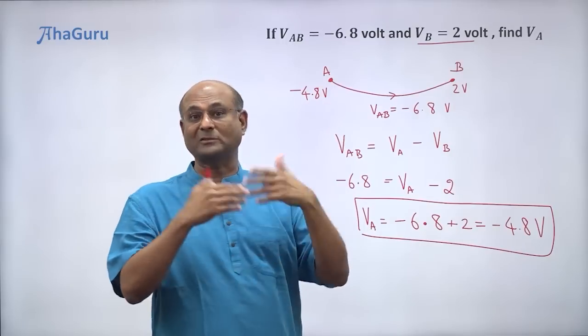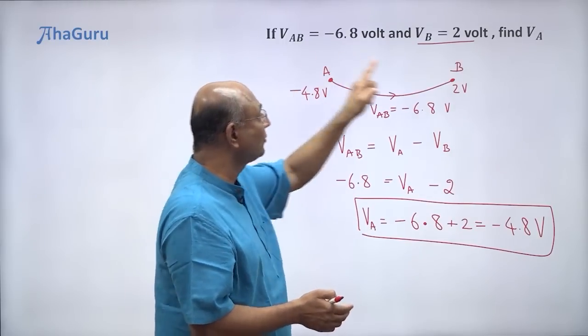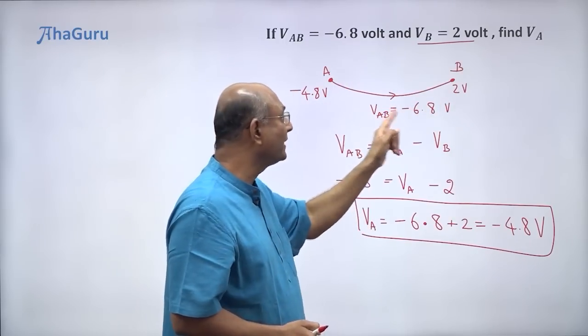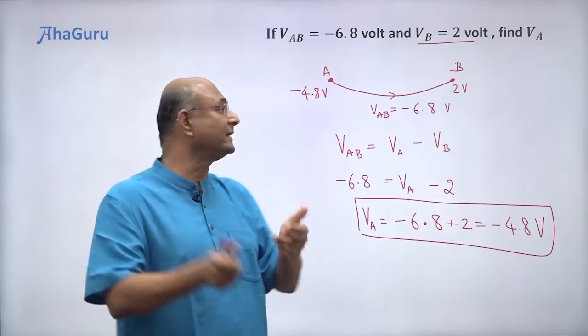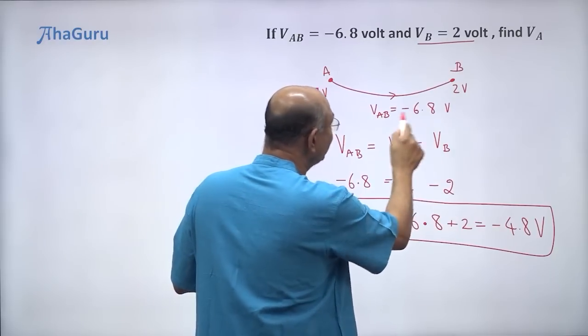Now because it actually rose, we are giving a negative value. So when you say potential drop is negative, what does it mean? The potential is actually increasing. So the potential drop is negative.